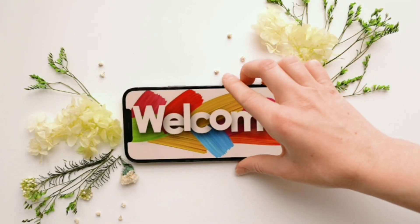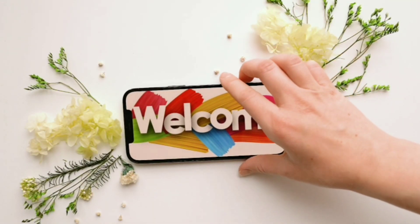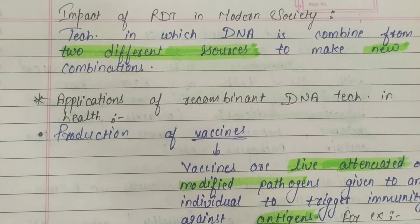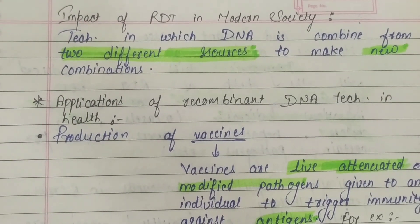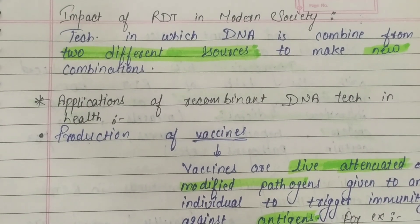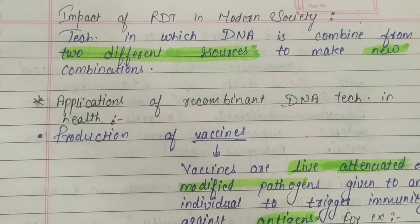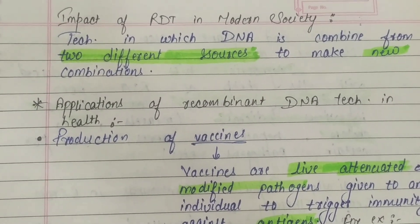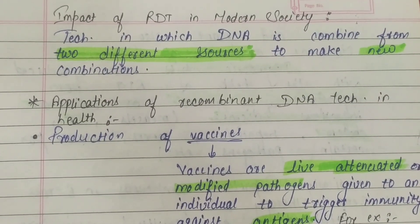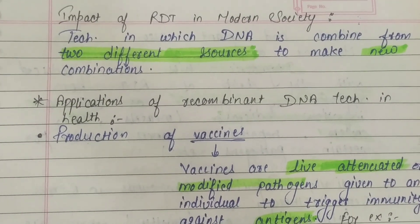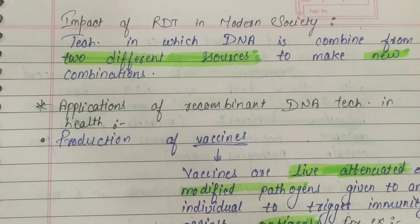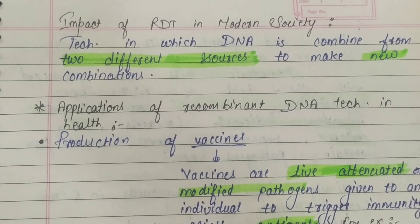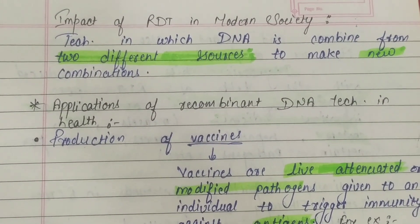Hello everyone, welcome to the channel Beta Biology. Today we will discuss the impact of RDT, or recombinant DNA technology, in modern society. RDT is a technique in which DNA is combined from two different sources to make a new combination — a new recombinant DNA.